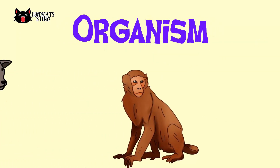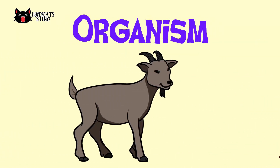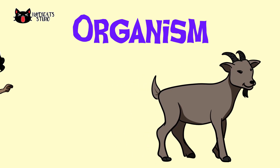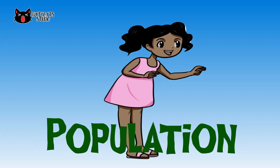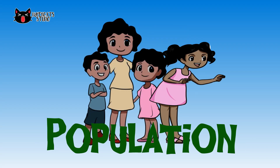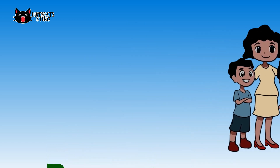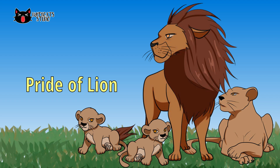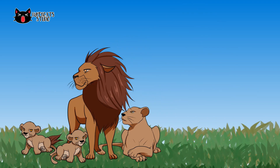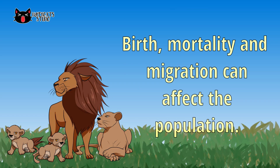An organism is an individual living thing that is made up of different organ systems. When multiple organisms reside in a specific common area, they will form a population — for example, the pride of lions in Kenya, Africa. Population can change over time because of events like birth, mortality, and migration of organisms.